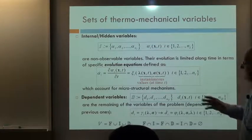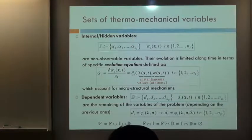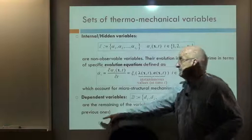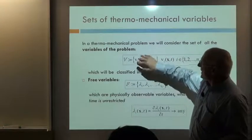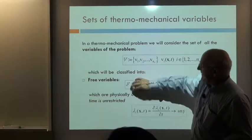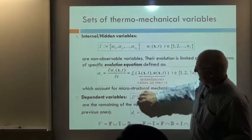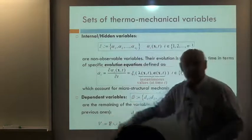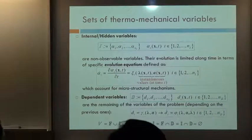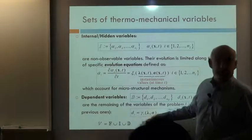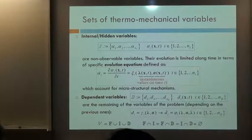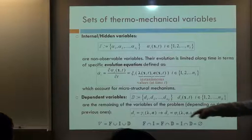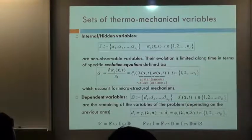So these are the three sets. The three sets are subsets of the total set V — the set of all variables. The union of the free variables, the internal variables, and the dependent variables returns the total variables, and these sets are disjoint with each other. There is no variable that can be at the same time free and dependent, or free and internal. They are disjoint sets.